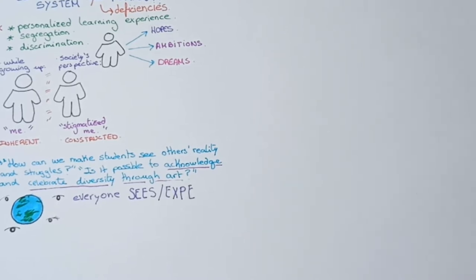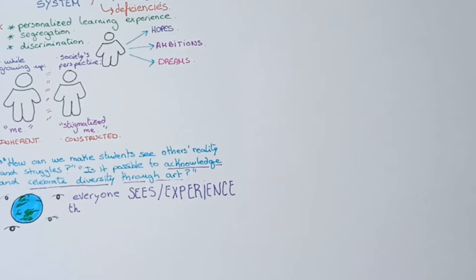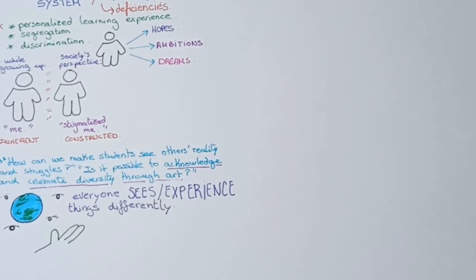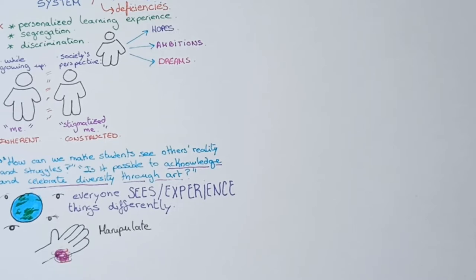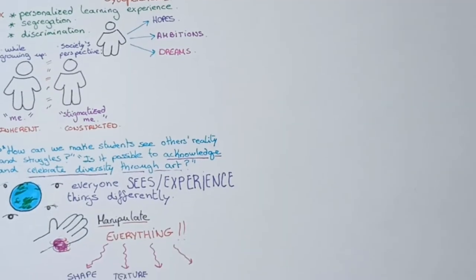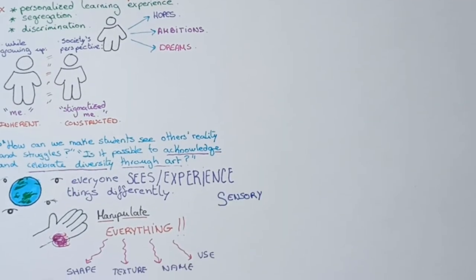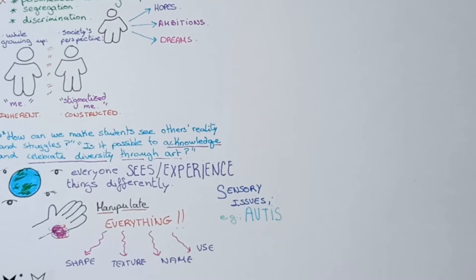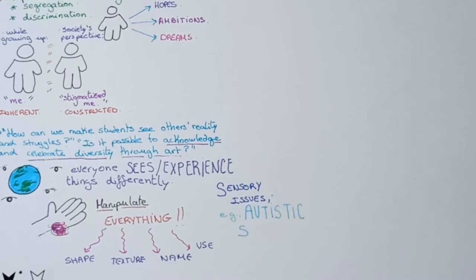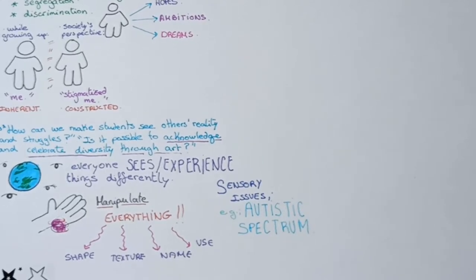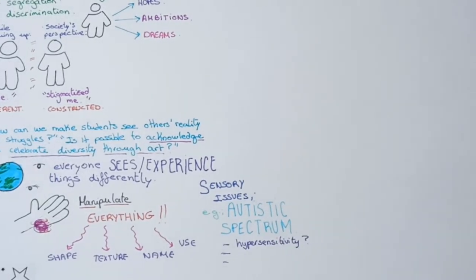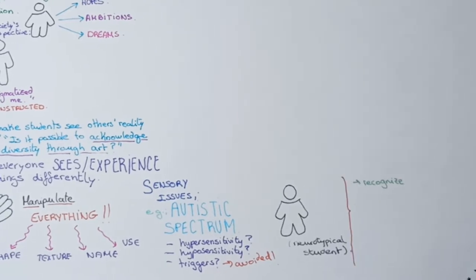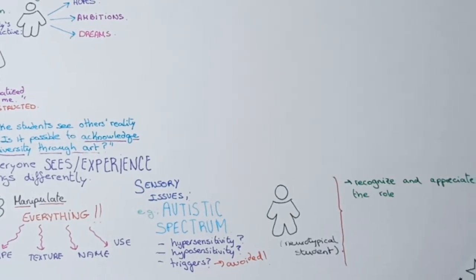It is encouraged to let blind people manipulate all the items, associating their textures and shapes with their names and uses. Moreover, it is different for each neurodivergent student, as there might be sensory issues. Using the autistic spectrum as an example, these textures could evoke different reactions, and we must know in advance what they can be exposed to, as any trigger must be avoided.